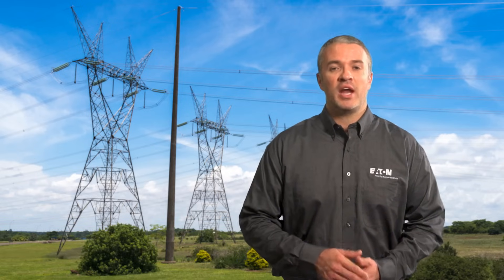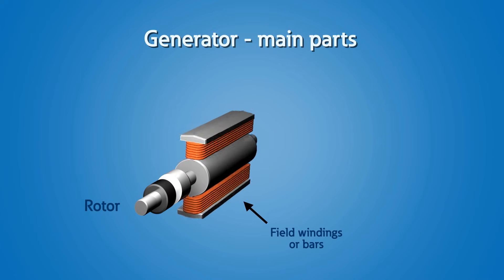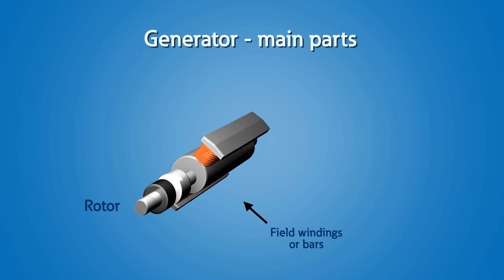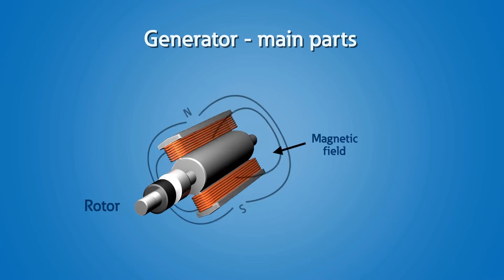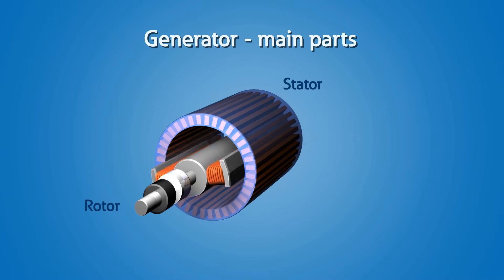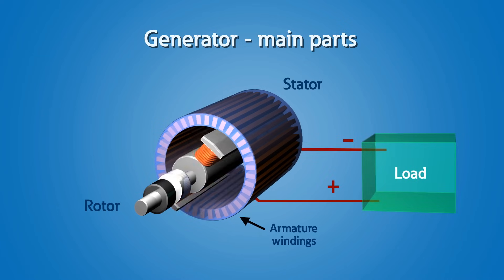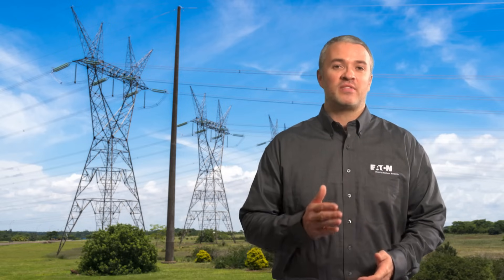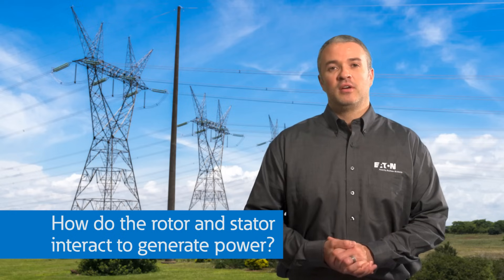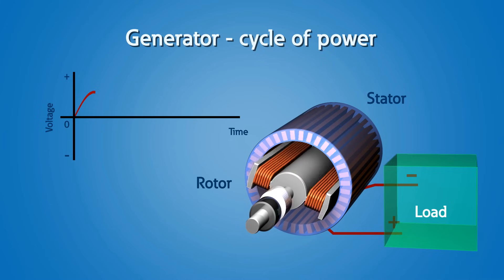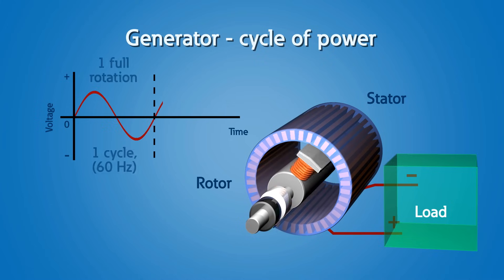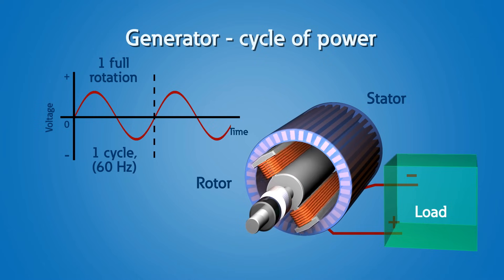The two main parts of a generator are the rotor and the stator. The rotor is the part that rotates and consists of many loops of copper wire or bars called field windings. Field windings are used to create the magnetic field induced on the metal core to which the wire is wrapped around. The stator is the stationary or static part of the generator that consists of copper windings called armature windings. The power produced by the generator will flow out of these armature windings towards the load.